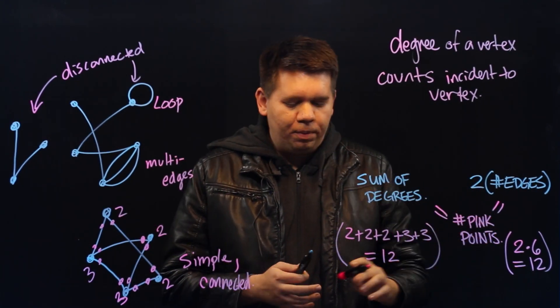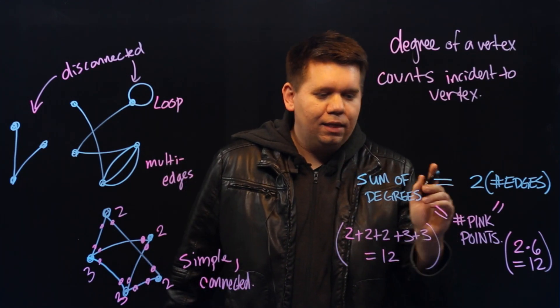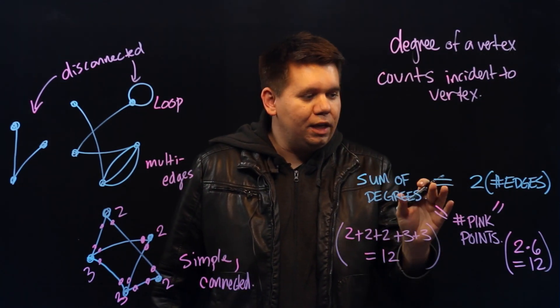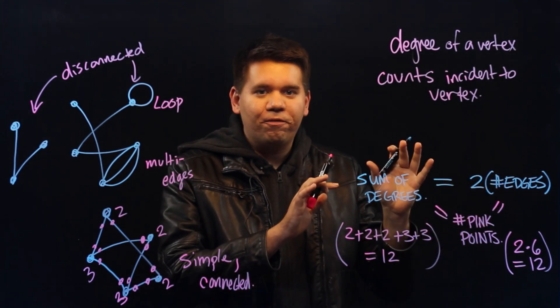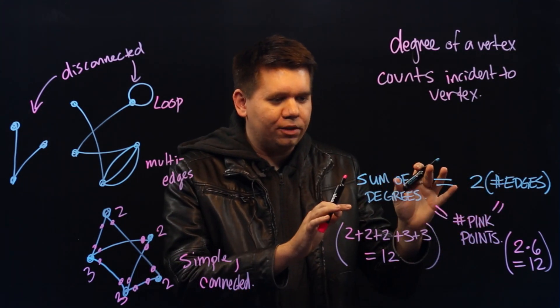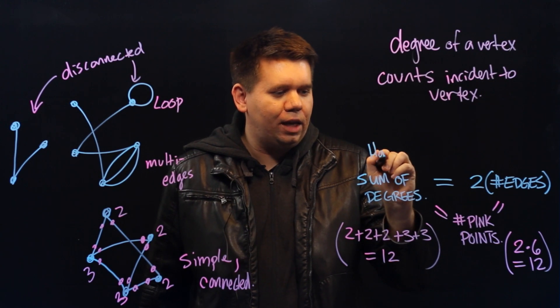In fact, since both are counted by the number of pink points, we can just say that the sum of the degrees will equal two times the number of edges. There we go. It's our first result from graph theory. This is called the handshaking lemma.